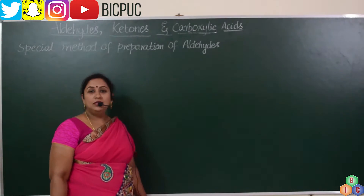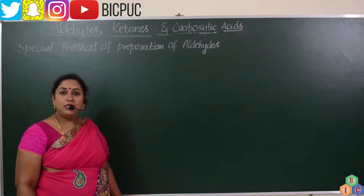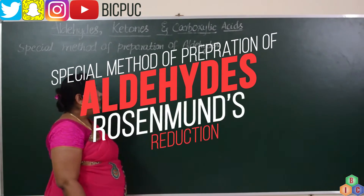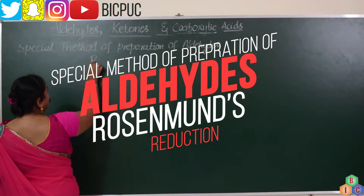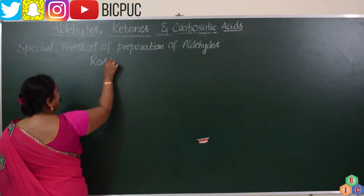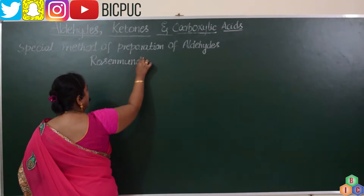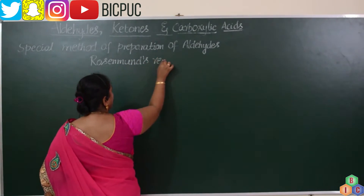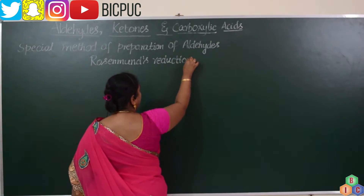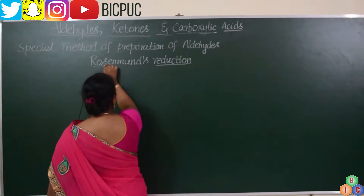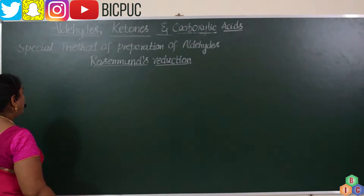In this video lesson, let us understand the special method of preparation of aldehydes. The special method of preparation of aldehydes we are talking about is called Rosenmund's Reduction. Rosenmund's Reduction is a very important reaction of organic chemistry, especially from the aldehydes, ketones, and carboxylic acids.